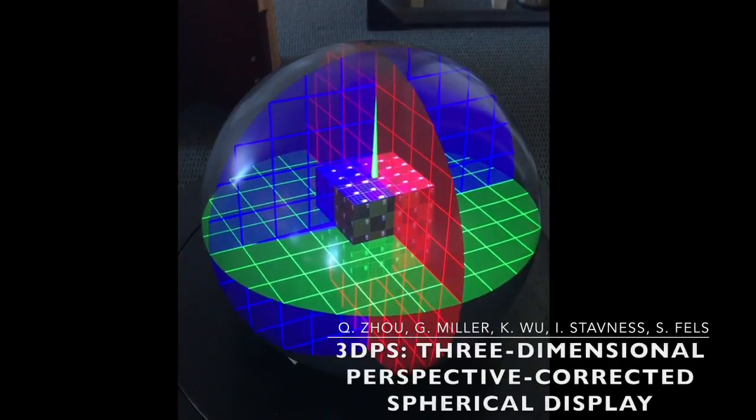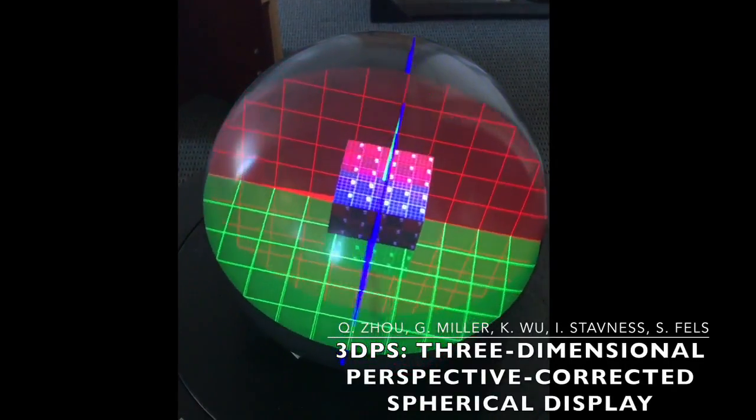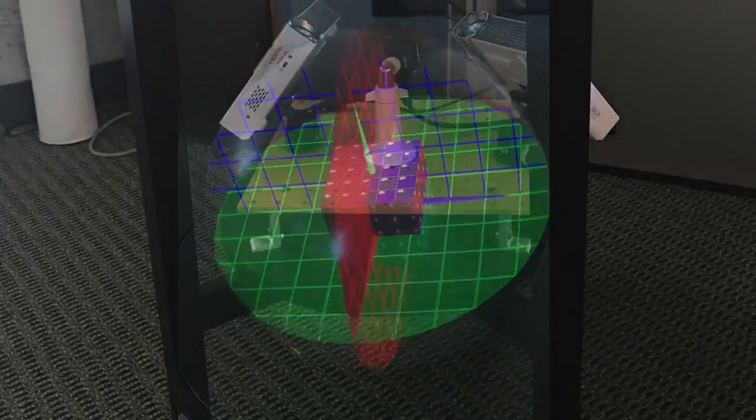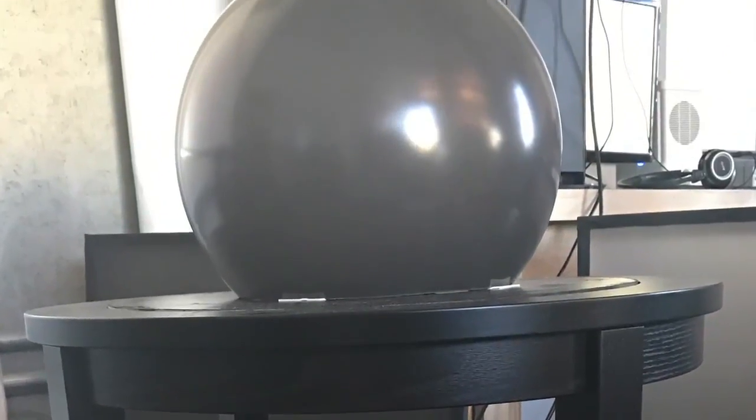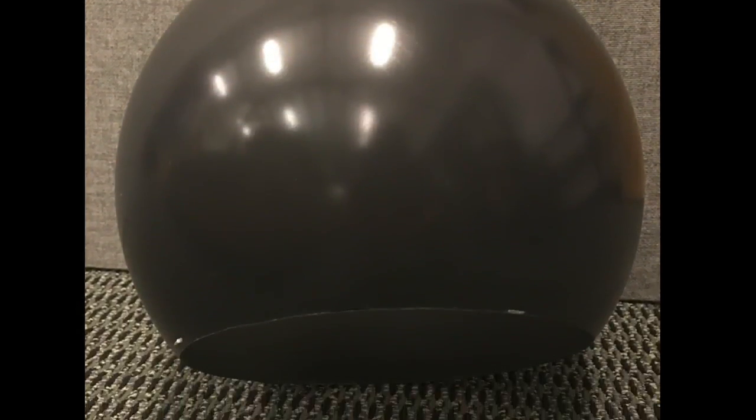We describe the design and applications of a 3D perspective-corrected spherical display. For spherical Fishtag VR, multiple projectors rear project through a projection hole at the bottom of the spherical screen.